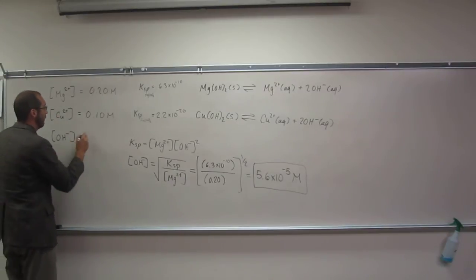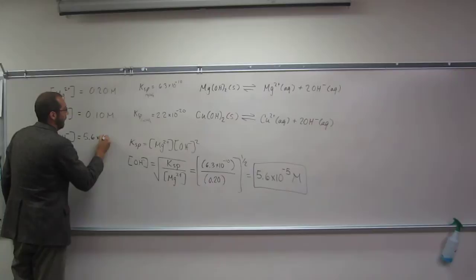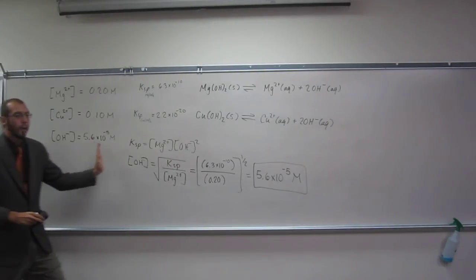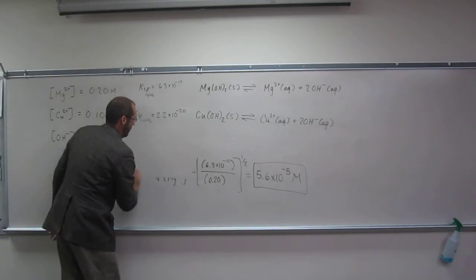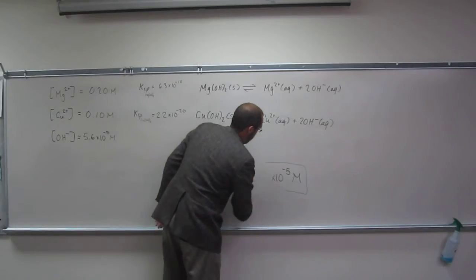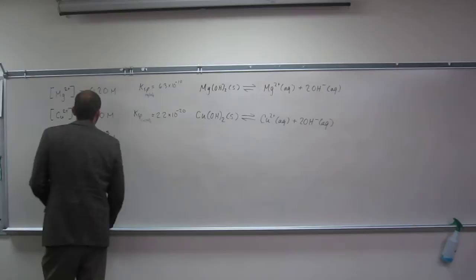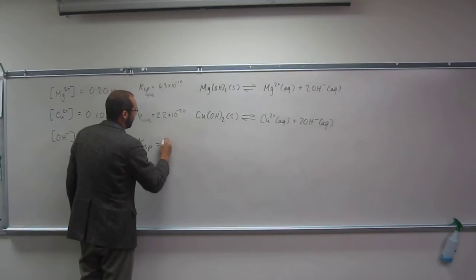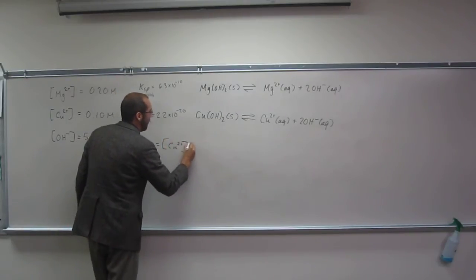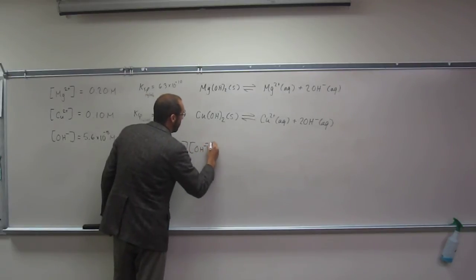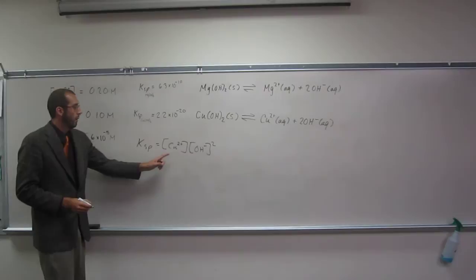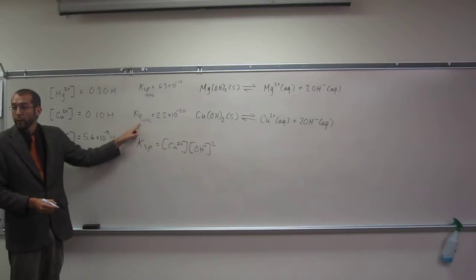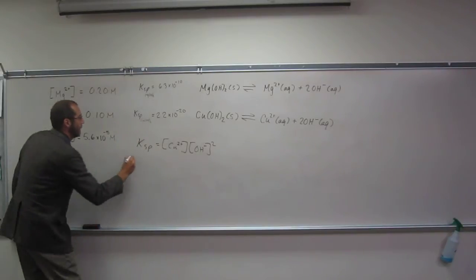I'm going to replace that question mark with 5.6 times 10 to the negative 5 molar. We know Ksp equals concentration of Cu2+ times the concentration of OH- squared. We know OH- concentration - it's right there. We know the Ksp of copper hydroxide, so we should be able to figure out how much copper is left in solution.